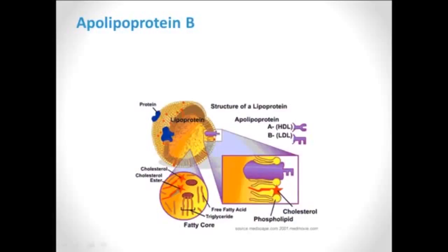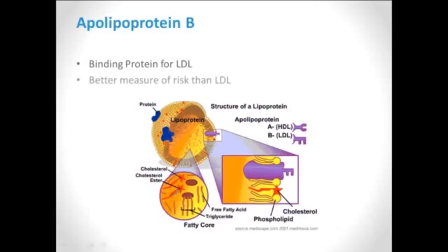Apolipoprotein B is part of the LDL, or bad cholesterol, particle. It is the part responsible for binding to blood vessels, making bad cholesterol bind to blood vessels and leave deposits of fat and plaque, which progressively builds up and causes obstruction of blood flow to your brain or heart, potentially leading to a stroke or heart attack. Studies have shown that ApoB is actually an even better measure of cardiovascular risk than the bad cholesterol particle itself.